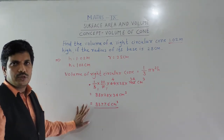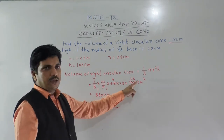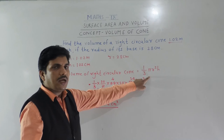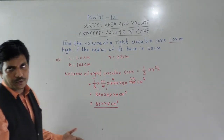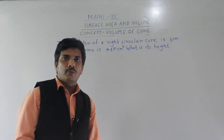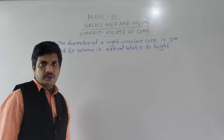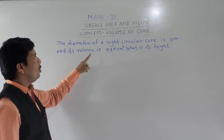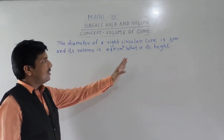This is a simple example based on only one concept — the volume of a right circular cone. The volume of a right circular cone is one by three pi r squared h. The answer to the next problem: the diameter of a right circular cone is 8 centimeters and its volume is 48 pi cubic centimeters. What is its height?